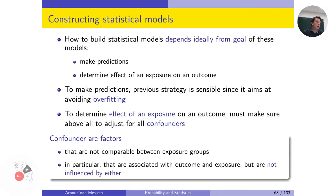If we want to find the effect of an exposure on an outcome, it is important to correct for confounding. In that case, we are not going to use the forward selection strategy. Instead, we want to include as many predictors as possible to eradicate confounding as much as possible.